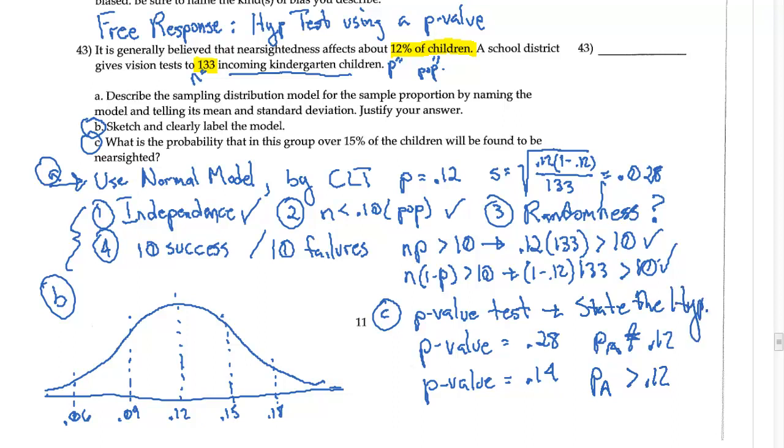So probably here you want to state the hypothesis and then do your p-value test like I just did. Now, this means that we would fail to reject, but it just wanted the probability. It didn't ask for a conclusion. So we're going to stop this problem right here and go on to some more hypothesis testing.